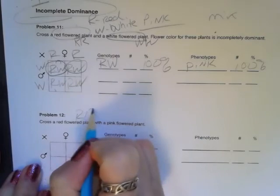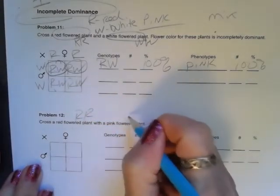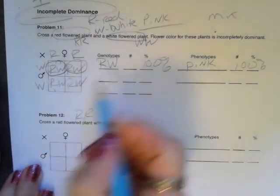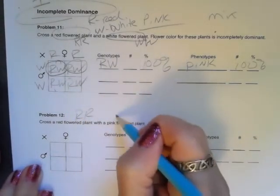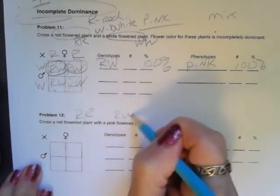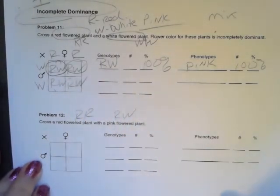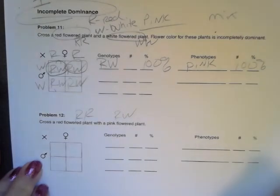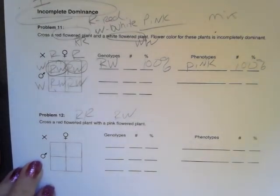You're going to do the next one on your own: a red flower plant — remember that's R, R — crossed with a pink flower plant. Remember, we're going to symbolize that with R, W.